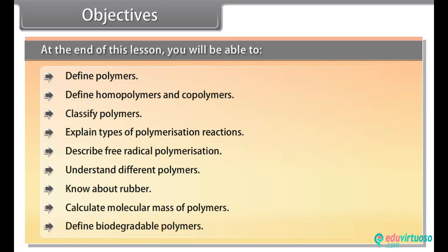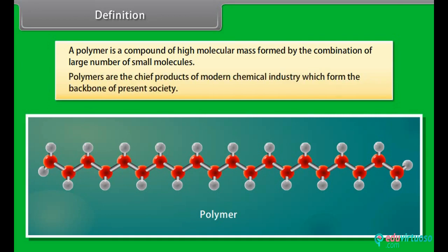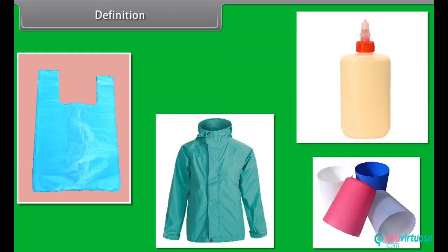Definition: A polymer is a compound of high molecular mass formed by the combination of a large number of small molecules. Polymers are the chief products of modern chemical industry which form the backbone of present society.